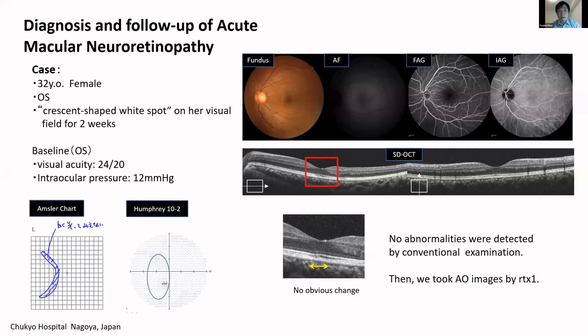Humphrey visual field showed a decrease of retinal sensitivity at almost the same area. But fundus camera, autofluorescence, and FA/ICGA seemed normal, and even the SD-OCT didn't show an obvious abnormality.